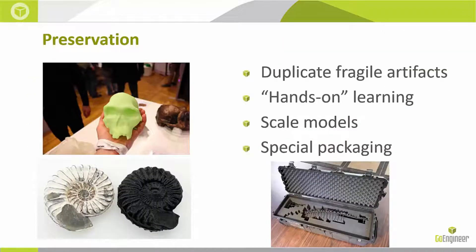The next category is preservation. 3D scanning and 3D printing together can help preserve so many of our priceless artifacts. For example, duplicating fragile artifacts can help preserve the originals by eliminating the need to always move or transport the part, which could potentially damage it. These 3D printed duplicates can provide a very cool, hands-on learning experience — students can grab, touch, and feel these parts, which may not have been possible with the originals.